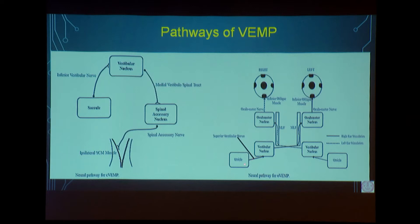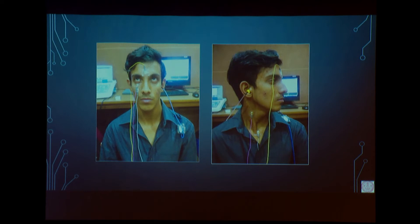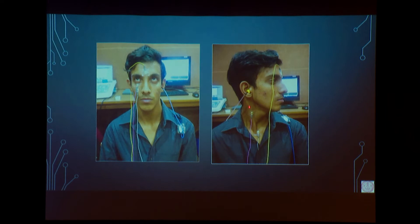The cVEMP response is ipsilateral and the oVEMP response is contralateral. For electrode settings in cVEMP, the positive electrode is placed on the sternocleidomastoid muscle, the negative on the sternoclavicular joint, with a ground electrode, and the stimulus is on the same side as the electrode. For oVEMP, the positive electrode is placed 1 cm below the eye, the negative 1 cm below that, but the stimulus is on the contralateral side because the oVEMP pathway is contralateral.